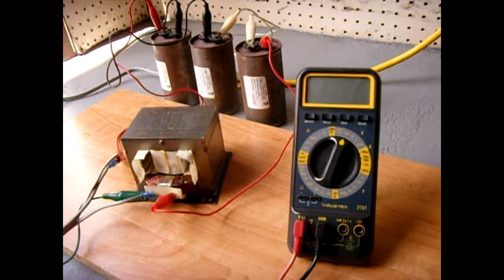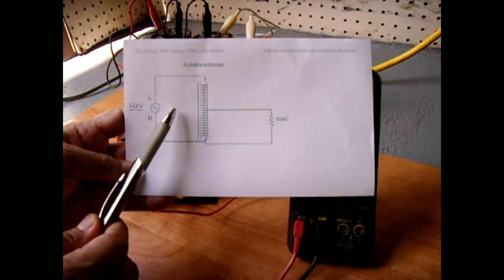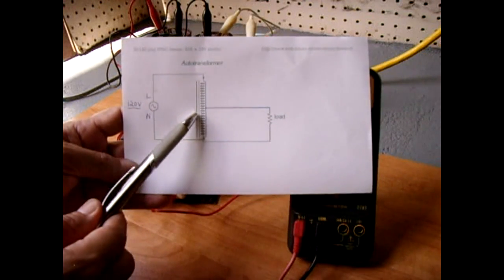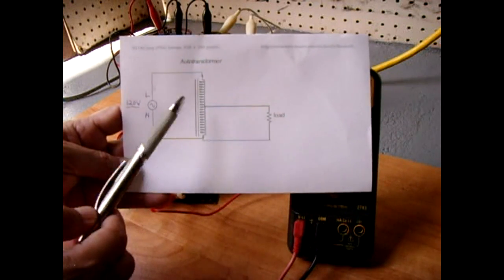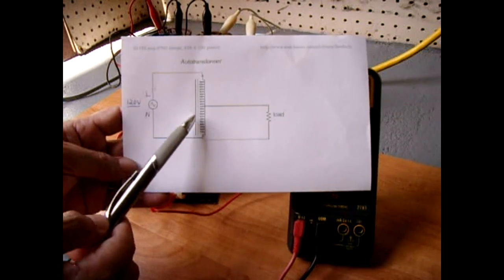If you take a look at this diagram right here, this shows it well. You have your single winding - there is no secondary winding - and you have your 120 volts, or it could be 220 whatever the winding is designed for, feeding into that winding.